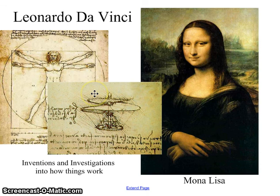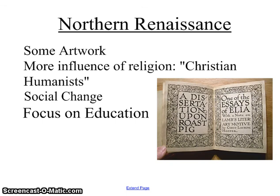We've looked a lot at the Italian Renaissance, which is really focused on beauty, sculpture, and art. The Northern Renaissance has a little bit of a different feel — it's much more into writing. There is some artwork, but there's a big influence of religion through the idea of Christian humanists: people who think humans are important, individuals are important, and who try to infuse that with Christianity and apply it to society. There's a big emphasis on social change — how do we make society better? Education is seen as a good way to do that.